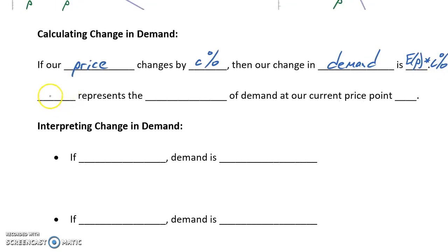E(p) is a new concept we're introducing here. E(p) represents the elasticity of demand at our current price point P. This gives us a relatively simple way of calculating how much impact a change in price will have on our change in demand.